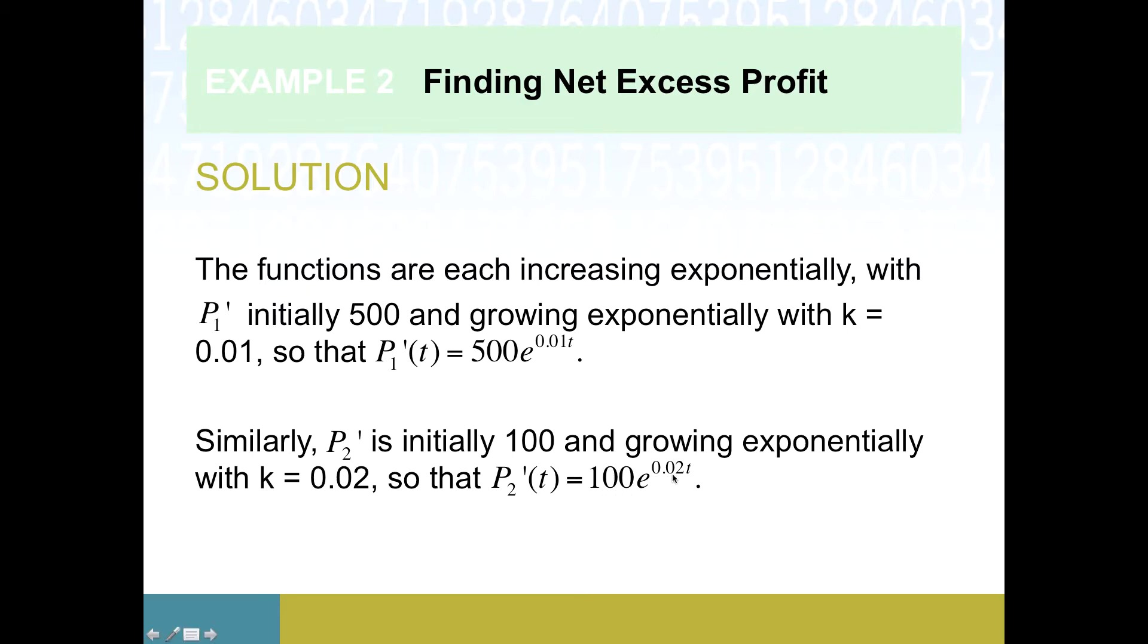And then a similar story for P2 prime, we've got initially 100. So there's our y-intercept, if you will. And then it was growing at 2%. So you can see, this one starts out as a larger value starts at 500. This one starts at 100. But this one's only growing by 1% per day, this one's growing by 2% per day. Eventually, this one will outstrip the first investment, at least in terms of rate.